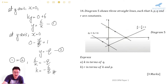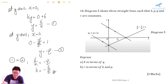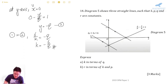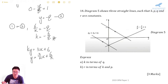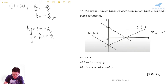For the second part, express R in terms of K and P. R is here, K is here, P is here. This straight line and this straight line are parallel, meaning they have the same gradient. The first line's equation rearranges to y equals 3 over k times x plus 6 over k, so the gradient m equals 3 over k. Therefore the gradient of the parallel line is also 3 over k.